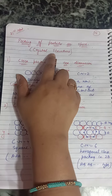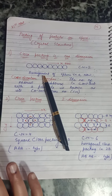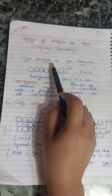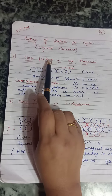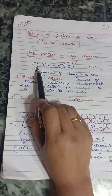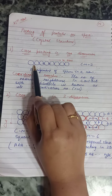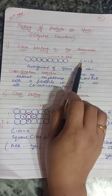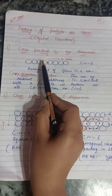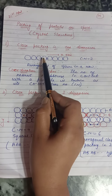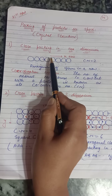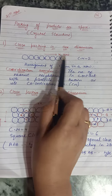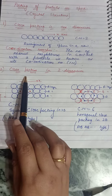In this topic of crystal structure, we have to study about only the particle arrangement. Once we understand the particle arrangement, it will be clear to us what type of crystal structure is formed. As we already discussed, in close packing in one dimension, particles are arranged along the x-axis, and the coordination number here is two — meaning each sphere is in contact with two neighboring spheres.